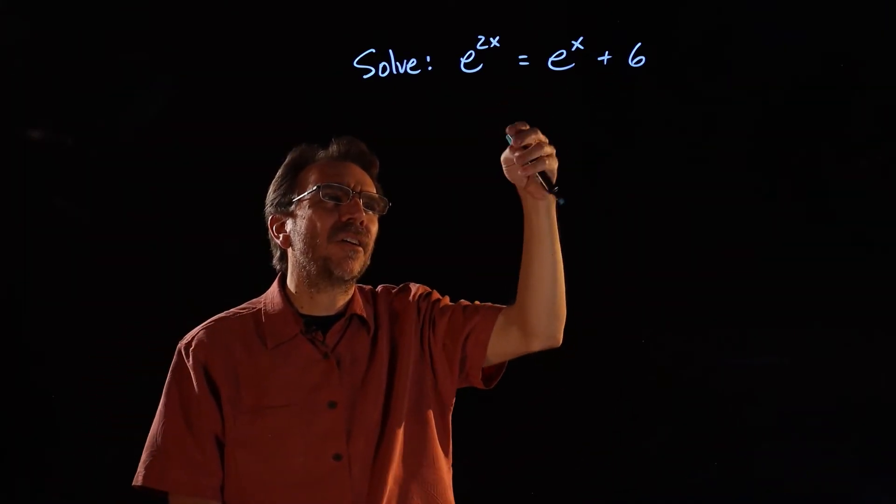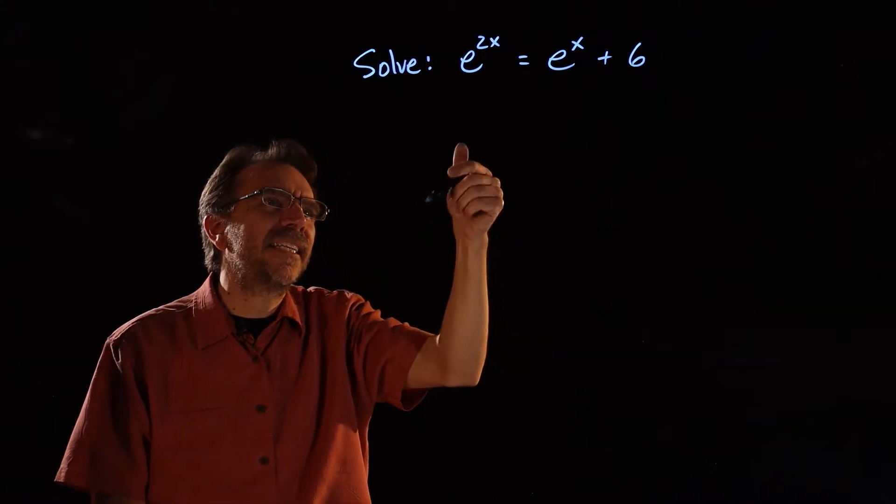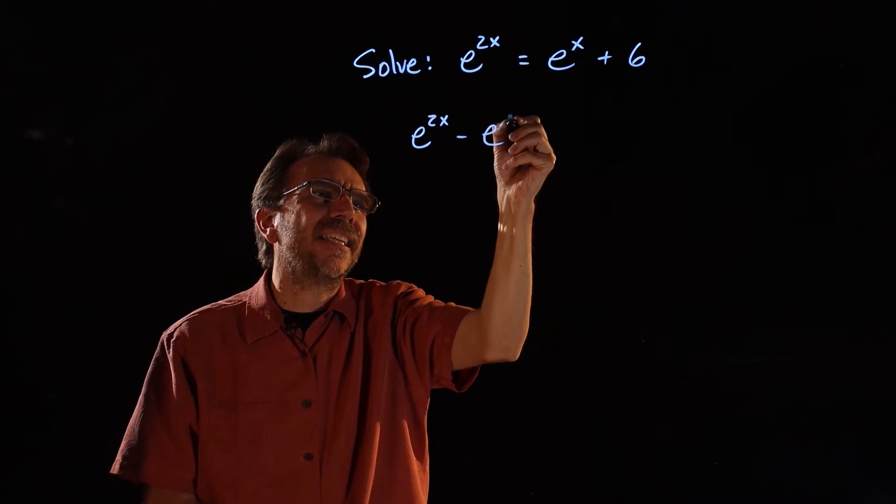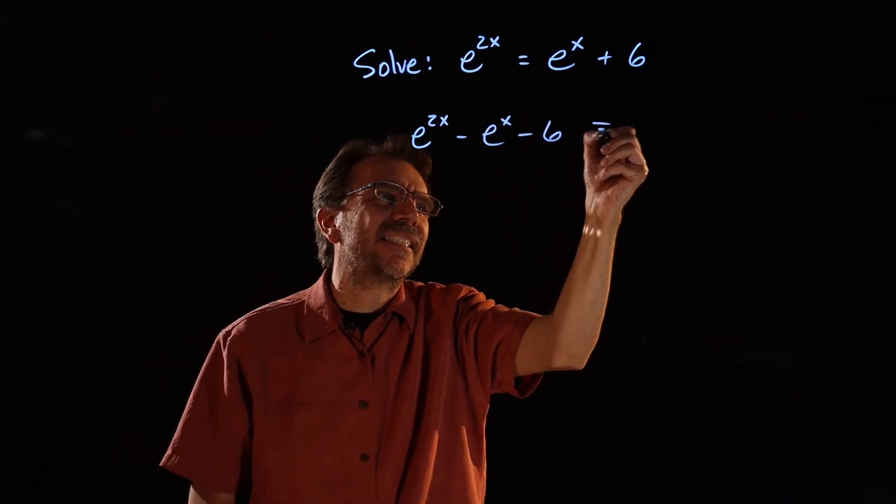So what I'm going to do is get all the terms on one side and get this thing equal to zero. So I'll subtract. We get e to the 2x minus e to the x minus 6 equals zero.